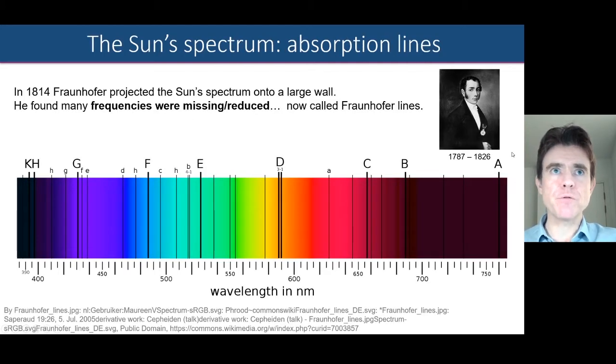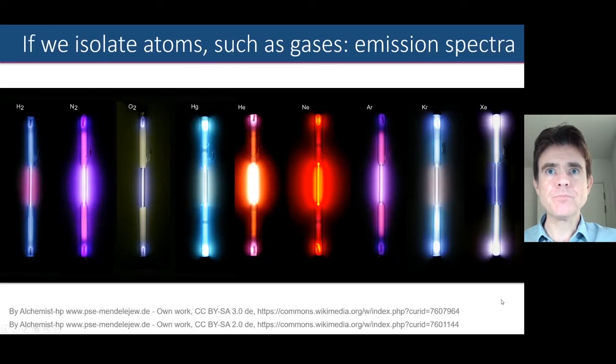So, as mentioned, Fraunhofer, in 1814, actually looked at the sun's spectrum, and he noticed that some frequencies were reduced in the sun's spectrum. It looked like a very discrete set of particular lines were not as present as other wavelengths were in the sun's spectrum. So that's on the one hand, looking at the reduced components in the sun's spectrum.